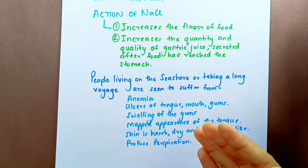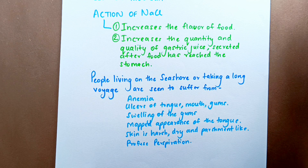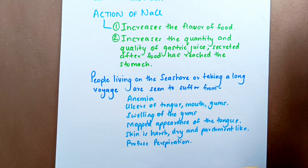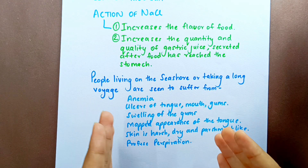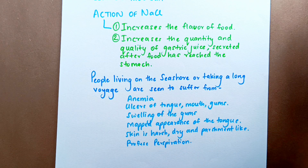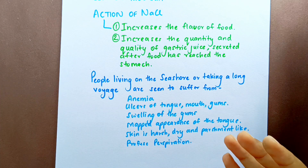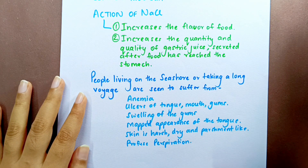Just as in toxicology, when certain substances produce poisonous symptoms in their crude form they will cure those symptoms when potentized — in the same way, what sodium chloride does to people around it will be the same group of symptoms cured by this remedy when potentized. Profuse perspiration and mapped appearance of tongue are characteristic symptoms of Natrium Muriaticum.